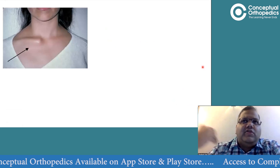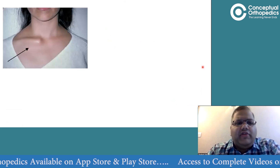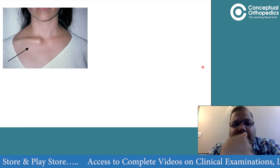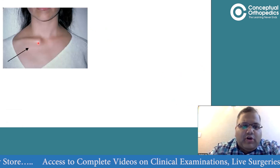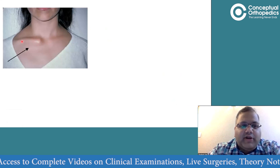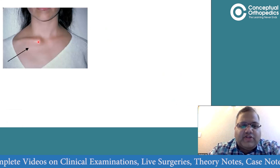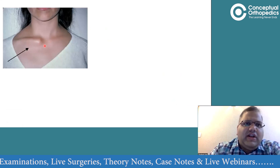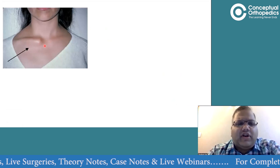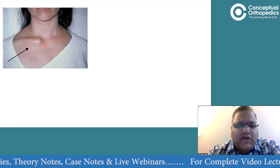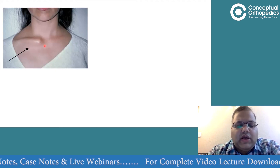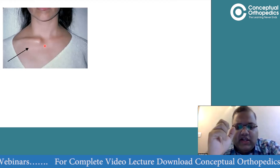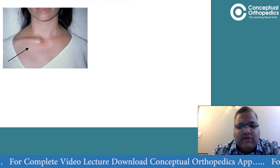Starting from the sternoclavicular joint and going distally - it's a rare exam question, but you might be asked. They might give a clinical picture showing a prominent sternoclavicular joint, where only the medial part of the clavicle is prominent. Typically the history will describe a fall or traffic accident with pain and swelling on the anterior part.